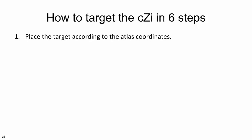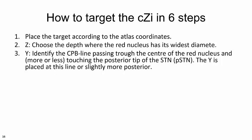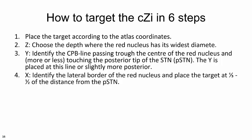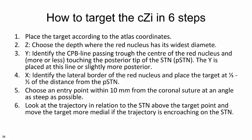First, place the target according to atlas coordinates. Then choose the depth where the red nucleus has its widest diameter — this gives the Z coordinate. Identify the CPB line passing through the center of the red nucleus; the Y coordinate is placed at this line or slightly more posterior. Identify the lateral border of the red nucleus and place the target at one third to one half of the distance from the posterior tip of the STN. Choose an entry point within 10 mm from the coronal suture at an angle as steep as possible. Finally, look at the trajectory in relation to the STN above the target point and move the target more medially if the trajectory is encroaching on the STN.